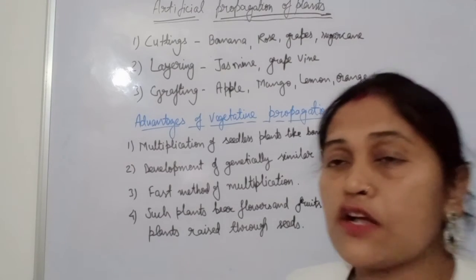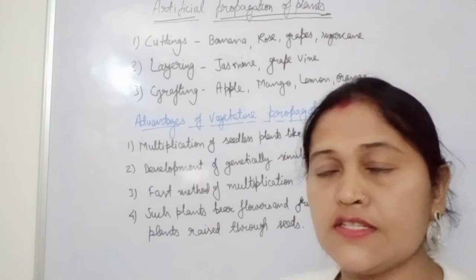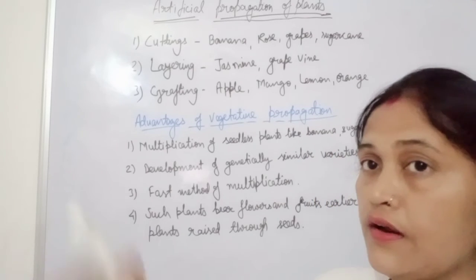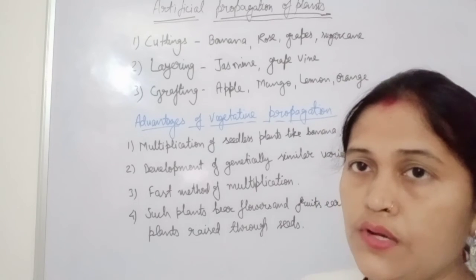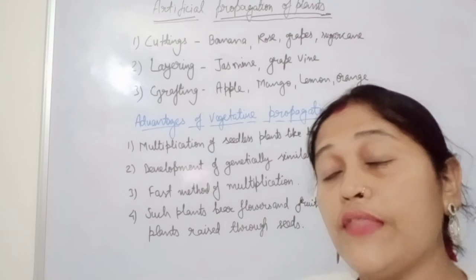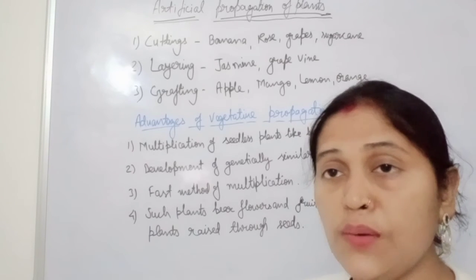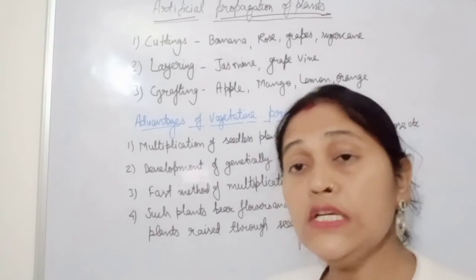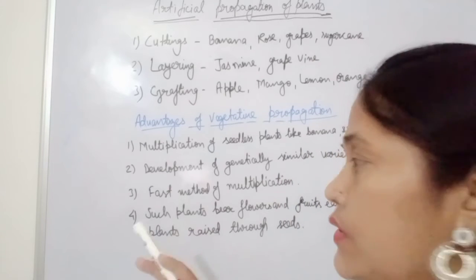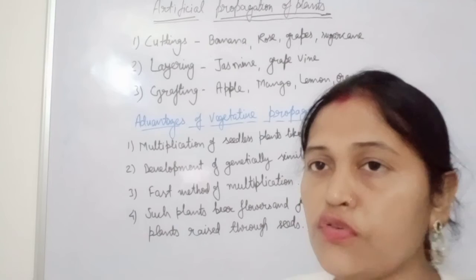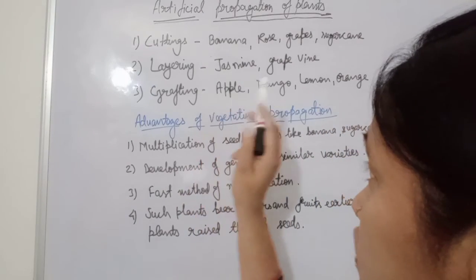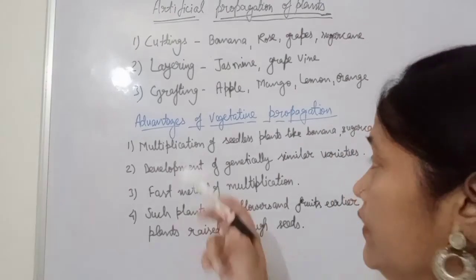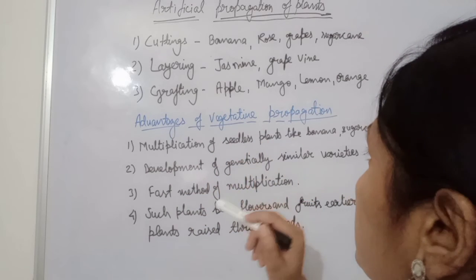The third type of artificial propagation is grafting. It is a technique of joining two plants — a shoot system is grafted onto the stump of another plant, and they finally form a new composite plant with qualities of both. The one onto which grafting is done is called the stock, and the other part is called the scion. Apple, mango, lemon, and orange propagate through this process.